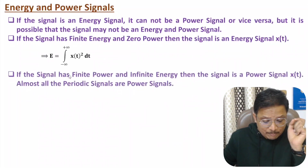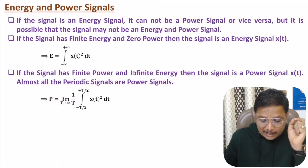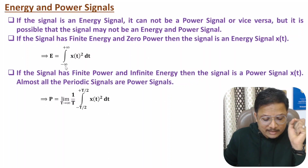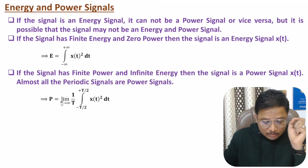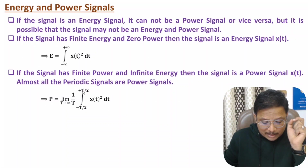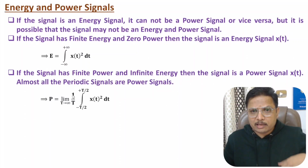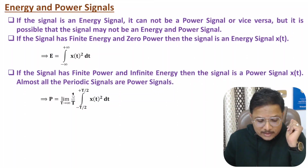To calculate the energy of a signal, use the integration with limits from −∞ to +∞ of |x(t)|² dt. To identify the power, take the limit as T → ∞ of (1/T) times the integral from −T/2 to +T/2 of |x(t)|² dt. Using these equations, one can identify energy and power, and I will be solving examples in future videos.